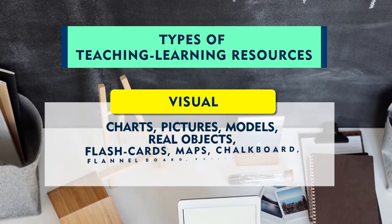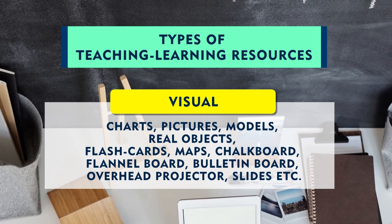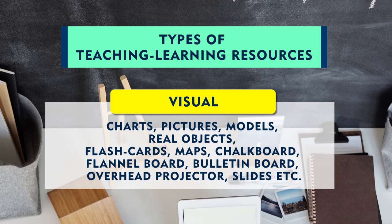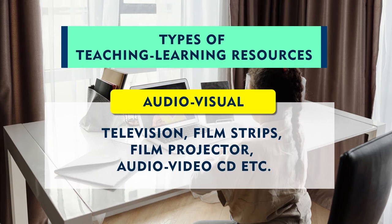Visual resources involve watching or viewing through the eyes. Charts, pictures, models, real objects, flashcards, maps, chalkboards, flannel boards, bulletin boards, overhead projectors, and slides — all these are used to facilitate learning by presenting something in pictorial form. Mostly these are 2D objects and learners use their eyes to learn from them. Then come audio-visual resources, where both audio and visual components are present, like television programs, TV channels, film strips, film projectors, and audio-video CDs. So we can categorize any resource as audio, visual, or audio-visual.